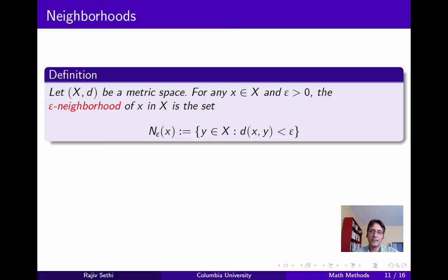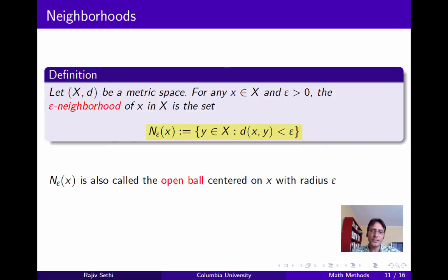Next we'll define neighborhoods. Consider any metric space and any point x in this space. For any positive epsilon, we define the epsilon neighborhood of x as the set of points y whose distance from x is less than epsilon. The epsilon neighborhood around x is also called the open ball centered on x with radius epsilon. Note that the definition of the neighborhood depends both on the set x and on the distance function d — if we change either of these, it will change the properties of this neighborhood.